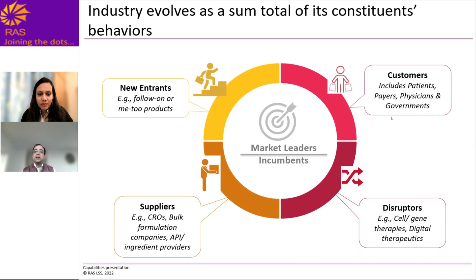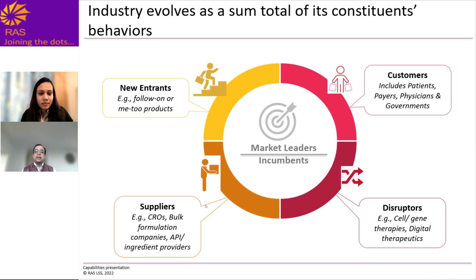Then you have customers on the top right, which are essentially all the individuals who will either pay for the product, consume it, or both, and also set up policy. In the case of pharmaceuticals, that would be patients, payers, physicians, and governments. Then you have disruptors — in the pharma context, these would be individuals coming up with cell therapies and gene therapies as compared to symptom suppressors. And then you have suppliers, like clinical research organizations, bulk suppliers, and formulation providers, who also have a role to play in how the industry evolves.